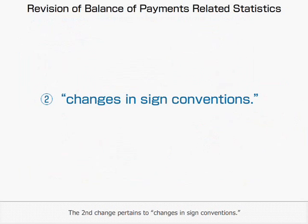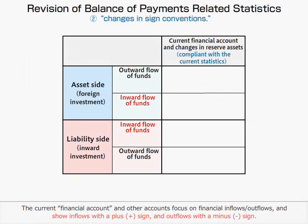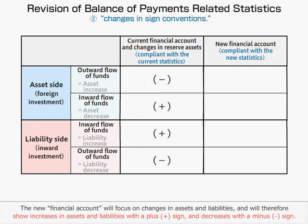The second change pertains to Changes in Sign Conventions. The current Financial Account and Other Accounts focus on Financial Inflows and Outflows, showing Inflows with a Plus Sign and Outflows with a Minus Sign. The new Financial Account will focus on changes in Assets and Liabilities and will therefore show Increases in Assets and Liabilities with a Plus Sign and Decreases with a Minus Sign.